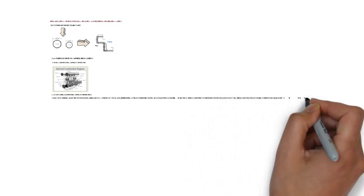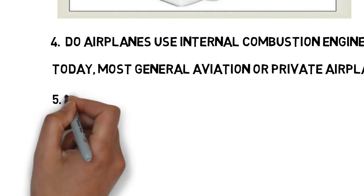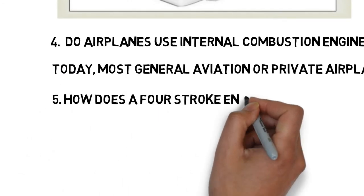5. How does a four-stroke engine work? The four strokes of the cycle are intake, compression, power, and exhaust.